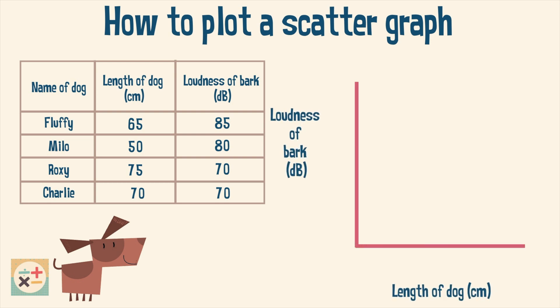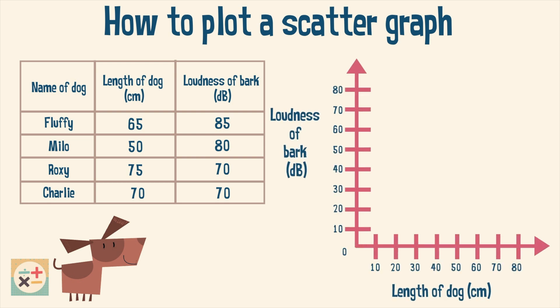Let's first plot the values for the dog named Fluffy. Find 65 centimeters on the x-axis labeled 'length of dog' and draw a line extending from this point. Then find 85 on the y-axis labeled 'loudness of bark' and draw a line extending from this. The point where the two lines cross is where we will draw the scatter plot.